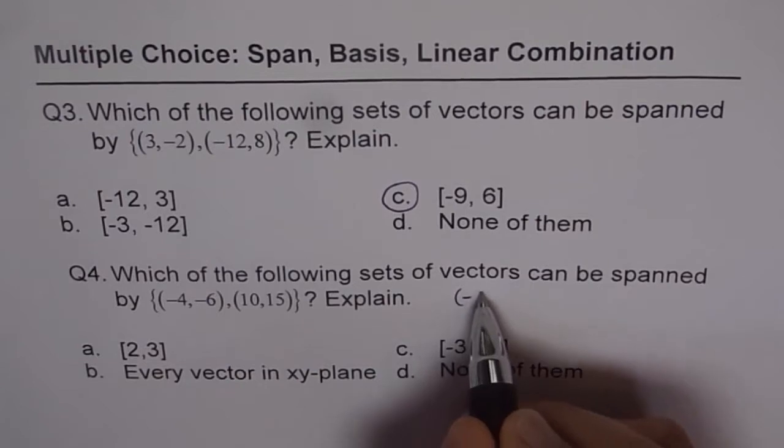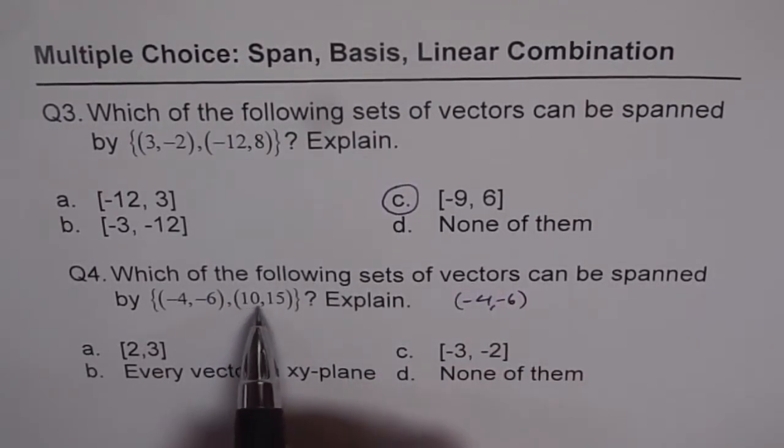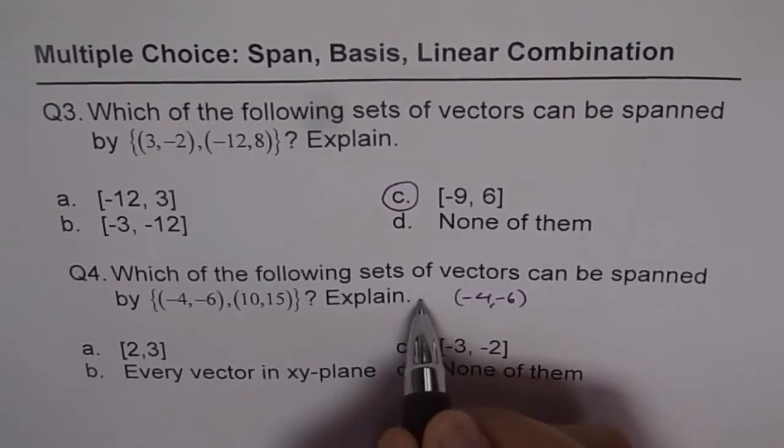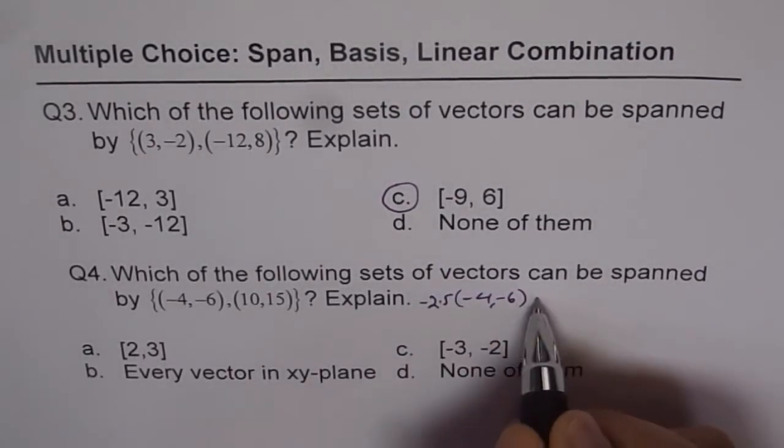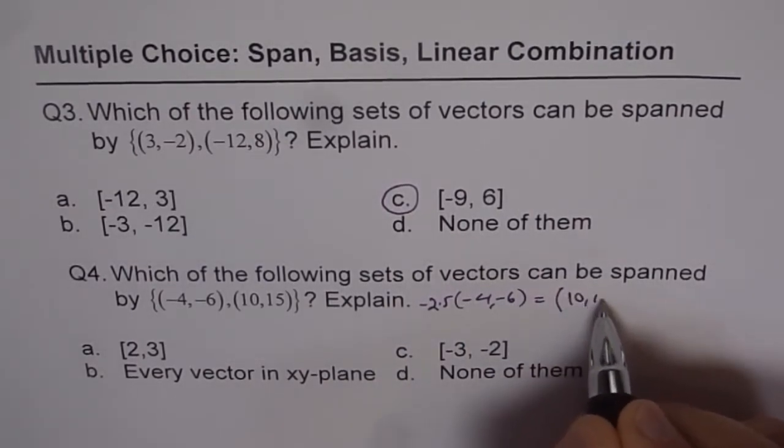So if I do {-4, -6} times, if I multiply this by -2.5, then what do I get? So as they are scalar multiples, I get {10, 15}.